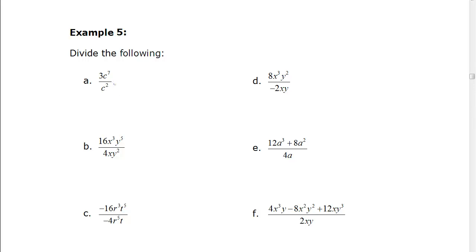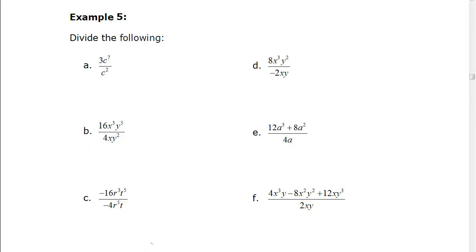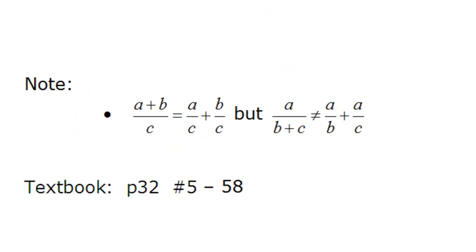In this lesson, we're going to quickly review the rules for dividing polynomial expressions. In each of the examples, you'll notice there's a monomial or a single term in the denominator. We never have a plus or a minus between terms in the denominator. And that's because of the note at the bottom of your page, which we'll focus on first.